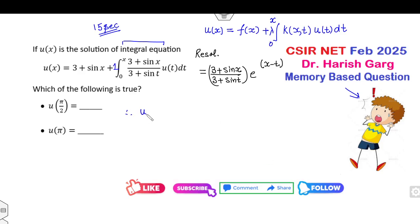So finally, your solution will be u(x) which is equal to f(x) plus integration from 0 to x of the resolvent kernel times f(t). So what is f(t)? You can see it's 3 plus sine t. I can write here 3 plus sine t. Now that's over.